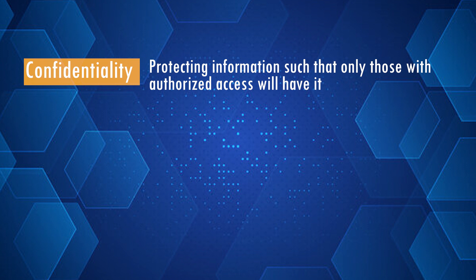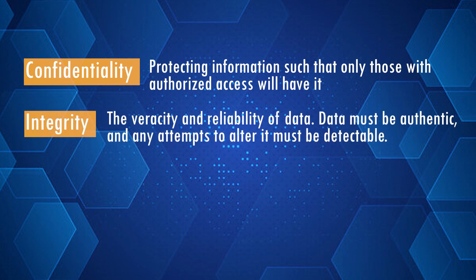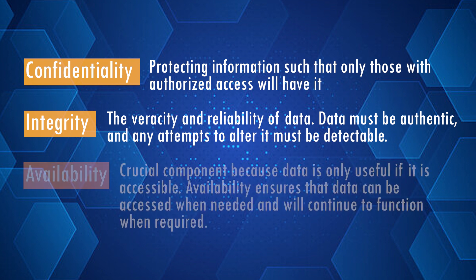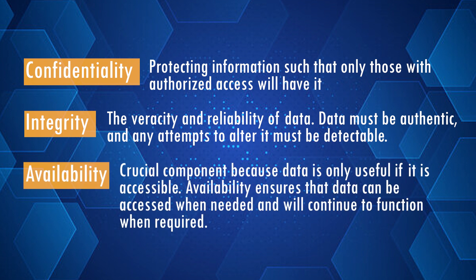There are three main objectives for TLS, and they are the famous CIA triad. The first is confidentiality, which refers to protecting information such that only those with authorized access will have it. The second is integrity, which relates to the veracity and reliability of data — data must be authentic and any attempts to alter it must be detectable. Third and last is availability — data is only useful if it is accessible, so availability ensures that data can be accessed when needed.